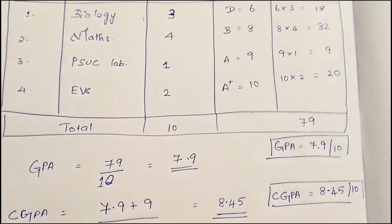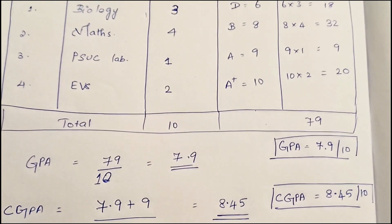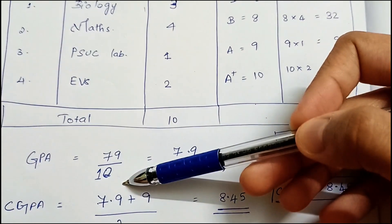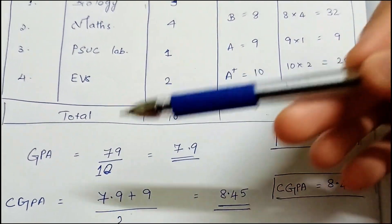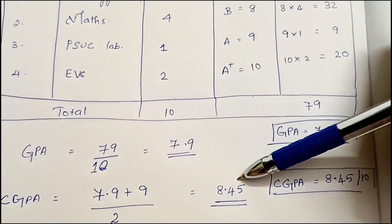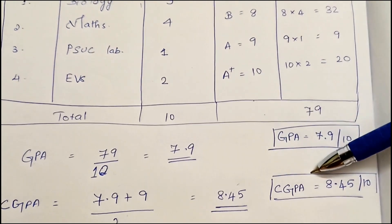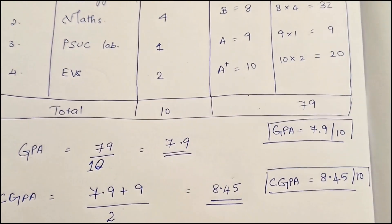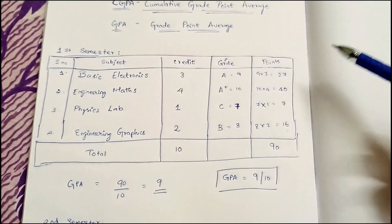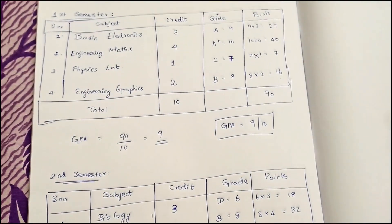Now let's talk about CGPA. CGPA is the Cumulative Grade Point Average — it is the average of both semesters. In the first semester you got a GPA of 9, and in the second semester you got 7.9. So CGPA = (9 + 7.9) ÷ 2 = 8.45. Your overall CGPA at the end of the first year is 8.45 out of 10.